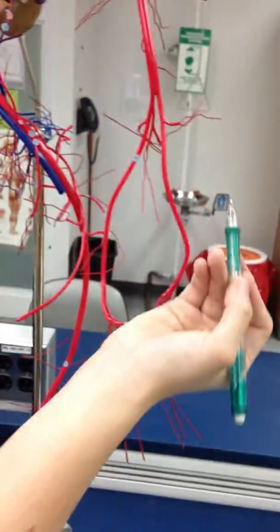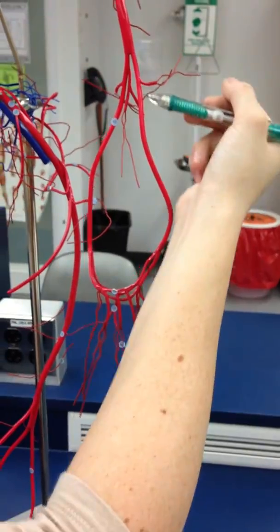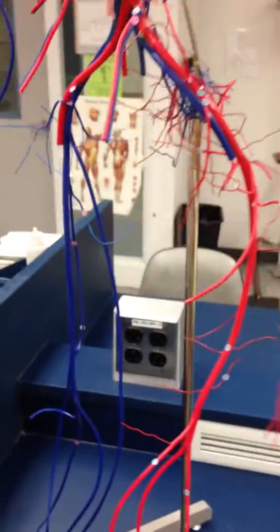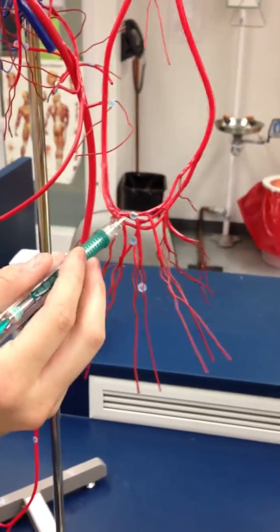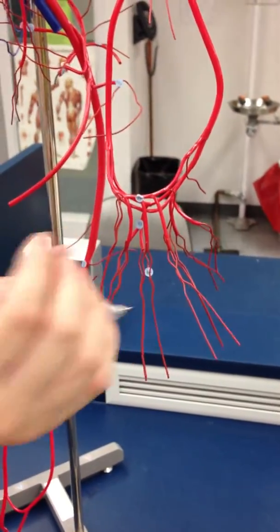And the radial is here, which goes to the thumb. Superficial palmar arches is number 73, so it's the outermost of the three branches here.